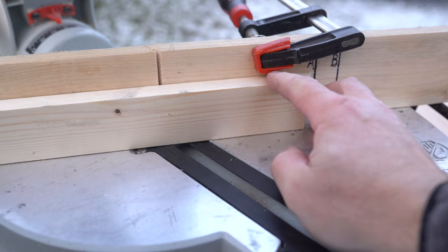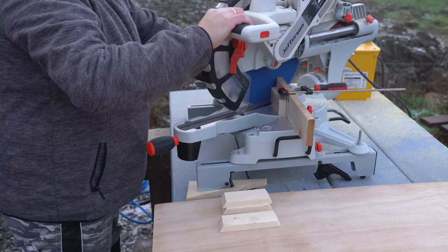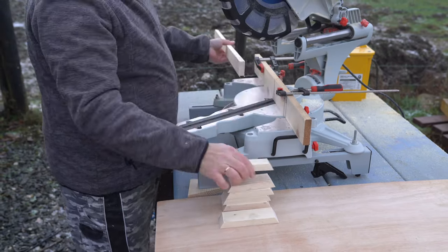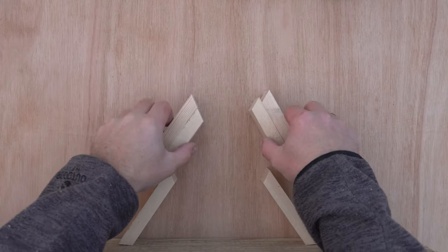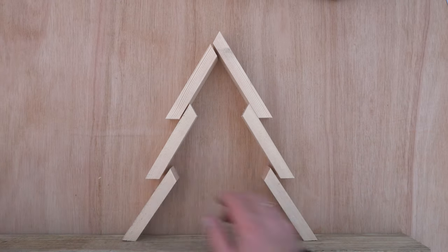When all is set up I am cutting parts for the Christmas tree branches. It is helpful to lay out parts against some straight edge to make sure we are going in the right direction.